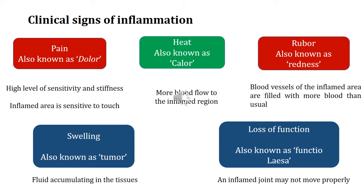The next important clinical sign is redness, also called rubor — the Latin term — and that is simply because more blood vessels in this area are filled with blood. The blood vessels in this region are filled with more blood than usual, and because of that excess of blood, that redness appears.